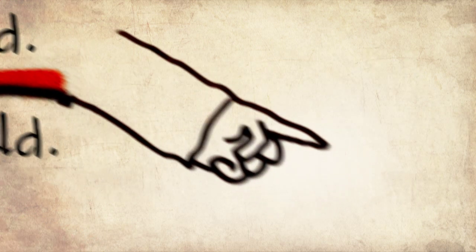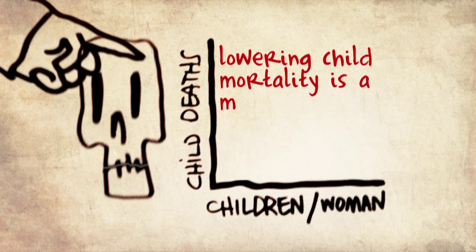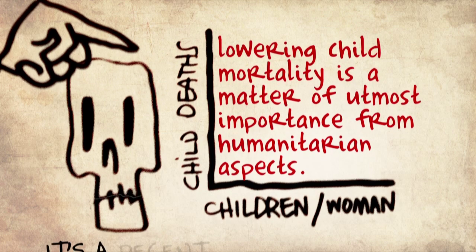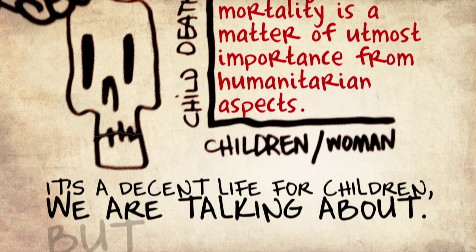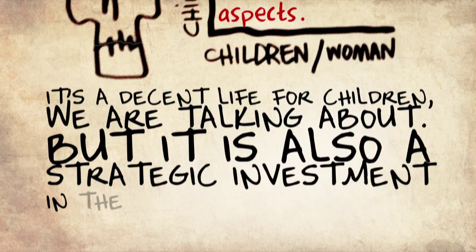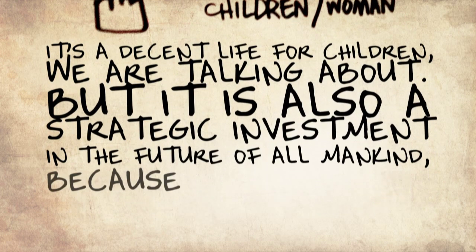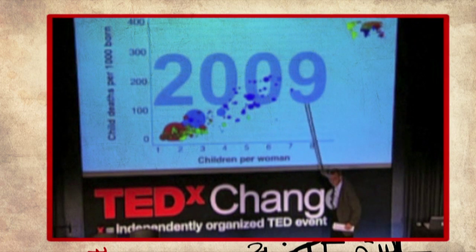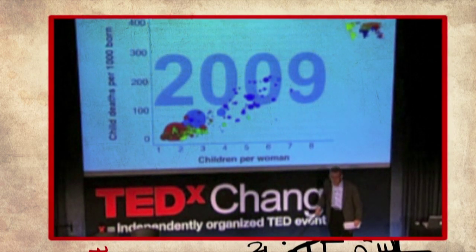Lowering child mortality is most important from a humanitarian aspect — it's about a decent life for children. But it is also a strategic investment in the future of all mankind because it's about the environment. We will not be able to manage the environment and avoid a terrible climate crisis if we don't stabilize the world population. The way to do that is to get child mortality down, get access to family planning, and drive female education. That is fully possible. Let's do it.